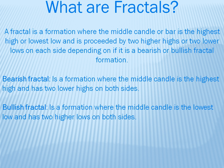Basically, a fractal is a formation where the middle candle or bar is the highest high or lowest low, and it's preceded by two higher highs or two lower lows on each side, depending on whether it's a bearish or bullish fractal formation. The bearish fractal formation is where the middle candle is the highest high and has two lower highs on both sides. The highest high is determined by the wick, not the close — you're looking at the high wick. The next candle's wick cannot go higher than that middle candle, and neither can the one after that.